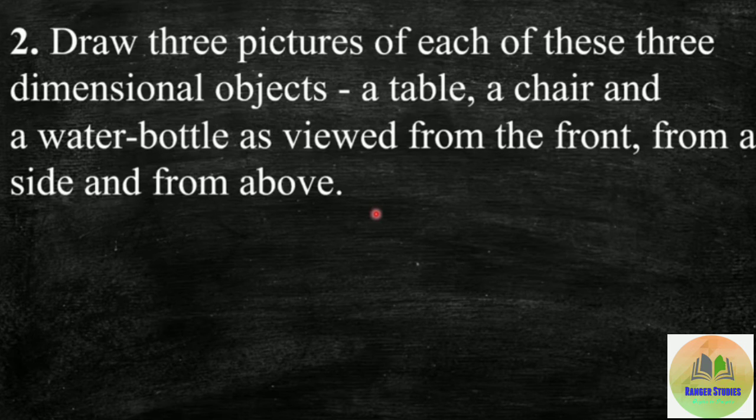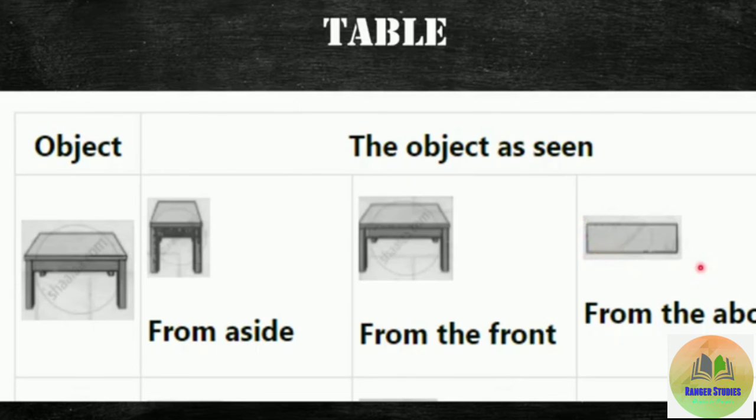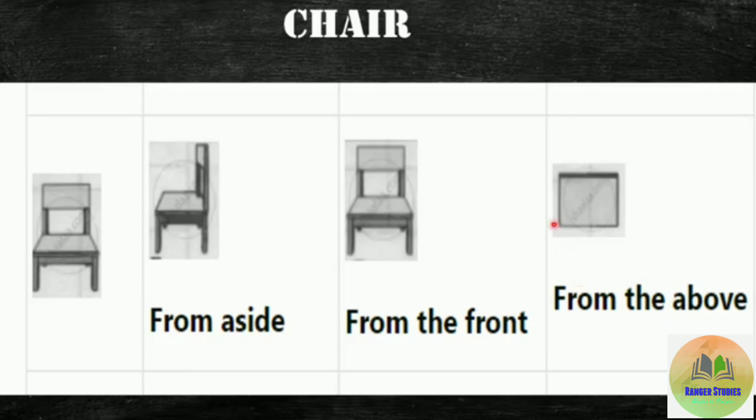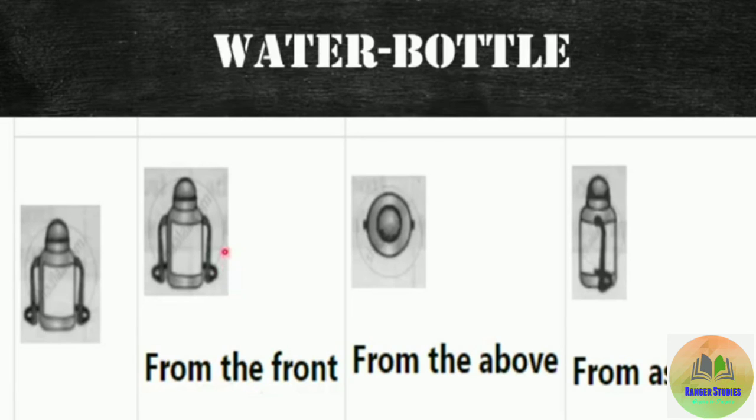Students, we have to draw three dimensional objects: a table, a chair and a water bottle. And you will draw view formation in front of that objects. So first object is table, chair and third one is water bottle. So students, draw all block formation in your notebook.